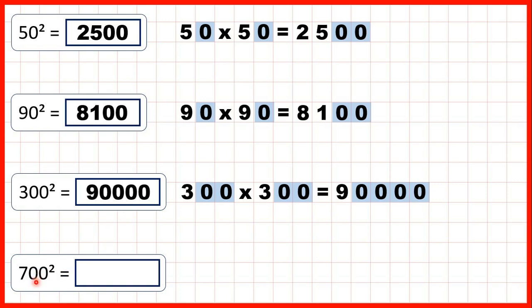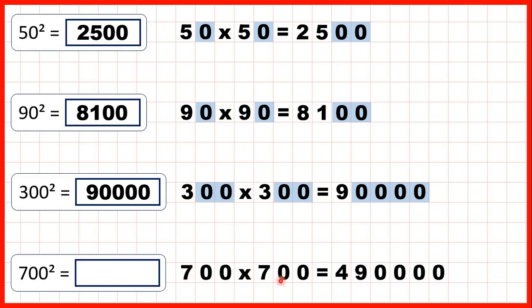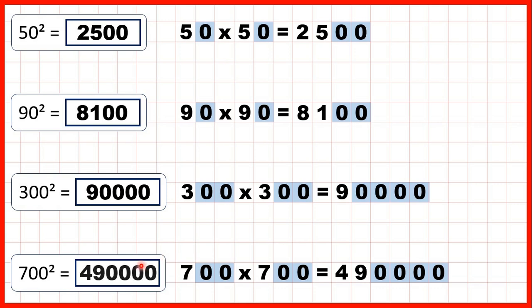Now, finally, we have 700 squared. So 700 times 700 is 490,000, because 7 times 7 is 49, and again, if we have a total of four end zeros in our question, we need four end zeros in our answer. So that's 490,000.